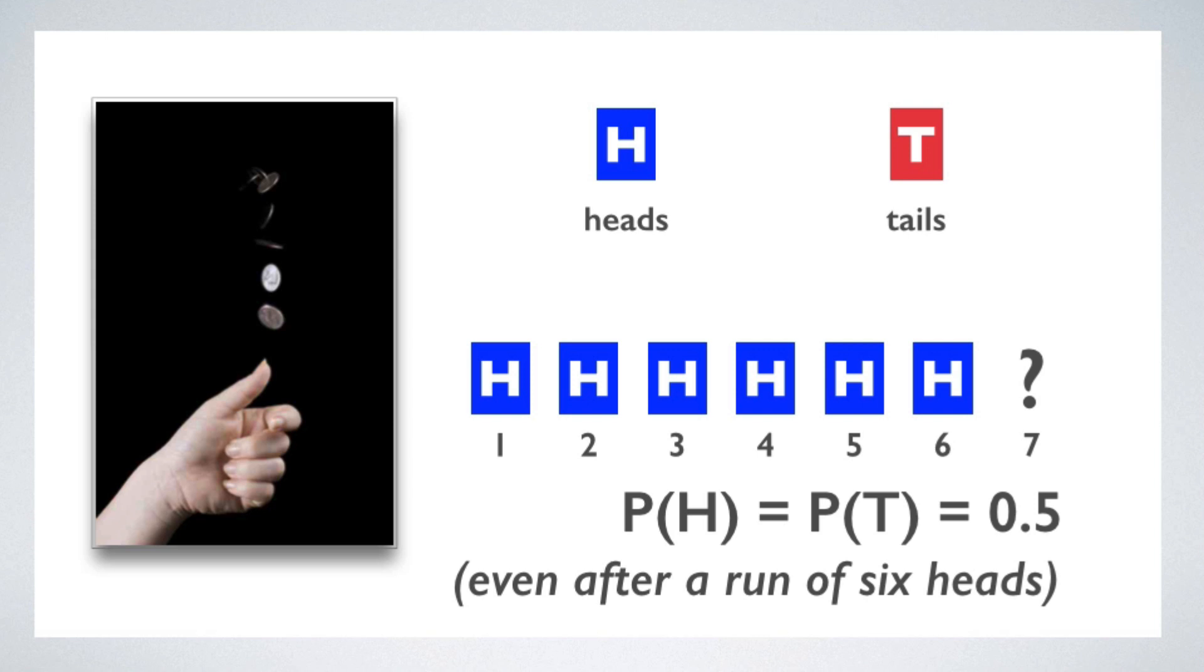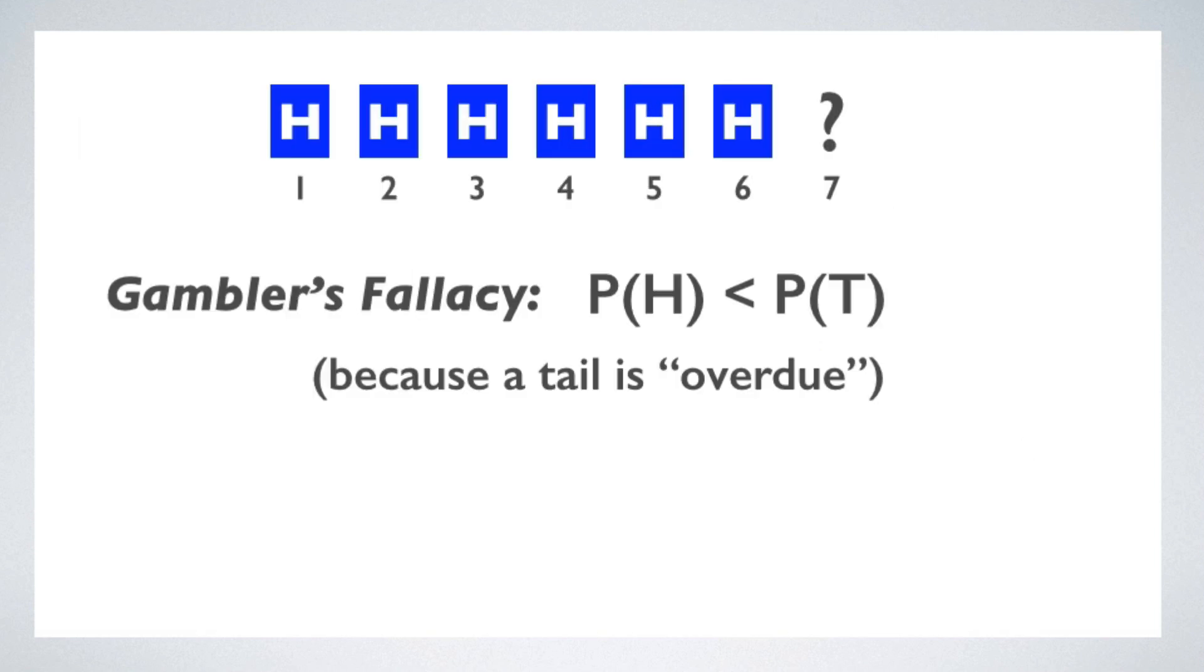Why? Because these are probabilistically independent events. The outcomes of the previous tosses have no influence on the probability of the next toss. So one way to state the gambler's fallacy is that it entails the faulty inference that the probability of landing heads is less than the probability of landing tails after a string of heads because the tail is overdue.